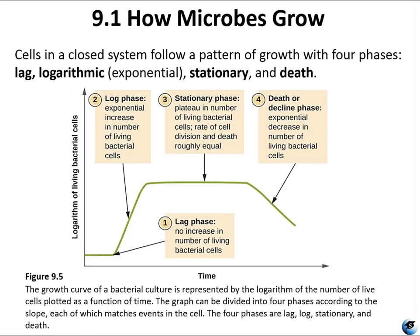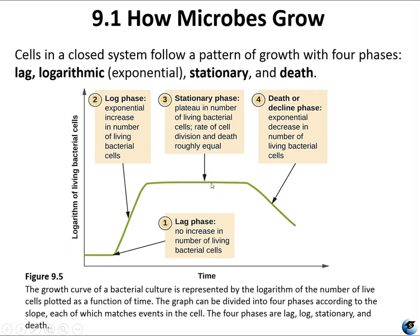In a closed system — like an incubation in the lab without outside interference — the growth phases go like this. There is the lag phase, where the cells are not dividing. The log phase is where the cells are growing and dividing exponentially. The stationary phase is like an equilibrium where the number of cells plateaus — maybe they're running out of food or conditions are no longer favorable. And then the decline or death phase, where the cells can no longer divide and reproduce and eventually die off. This is the growth curve.